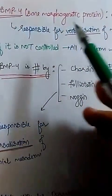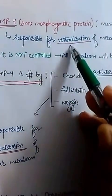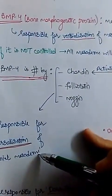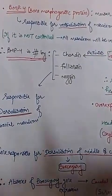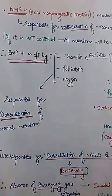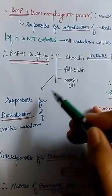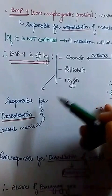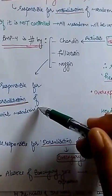Since chordin, follistatin, and noggin inhibit BMP4, which causes ventralization, their presence results in dorsalization — specifically of the cranial mesoderm. We know that structures like kidney and blood come from ventral mesoderm, such as the lateral plate mesoderm. These three genes cause dorsalization of the cranial mesoderm by inhibiting BMP4.